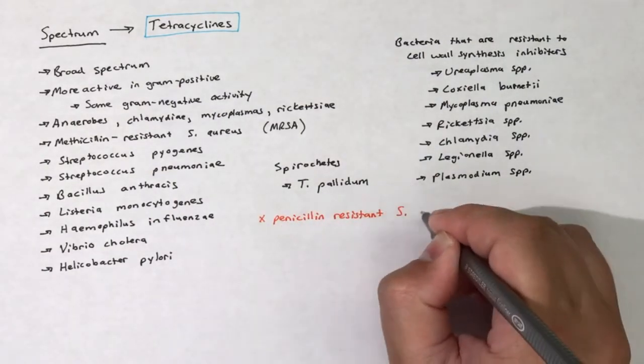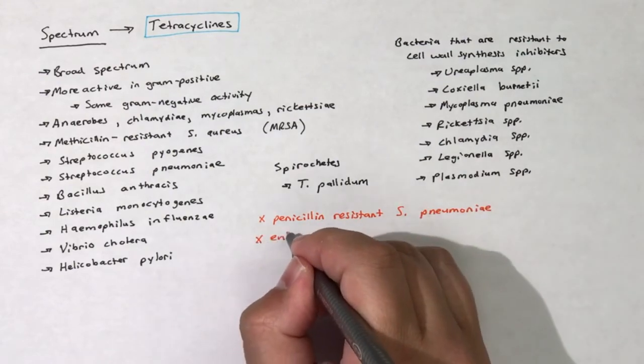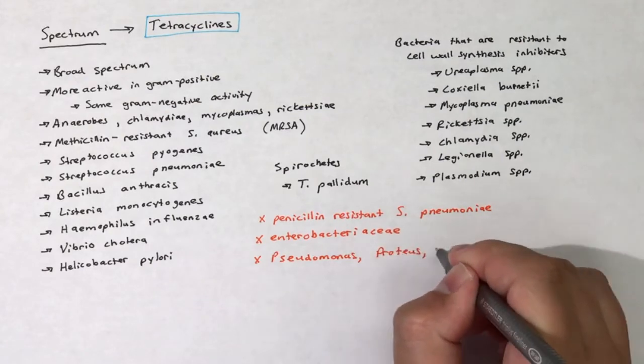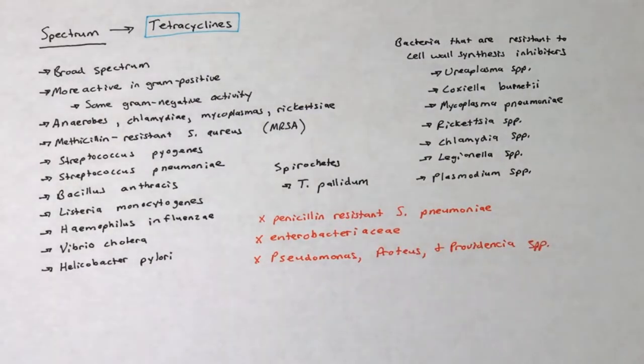Tetracyclines are inactive against penicillin-resistant S. pneumoniae, and many Enterobacteriaceae have acquired resistance. In addition, tetracyclines are inactive against Pseudomonas, Proteus, and Providencia species.